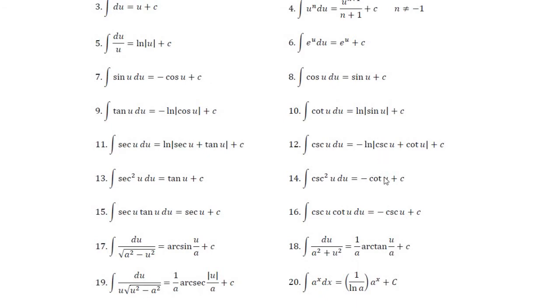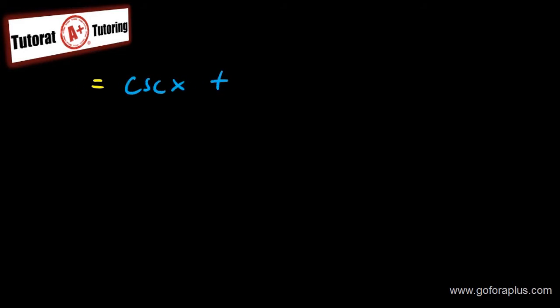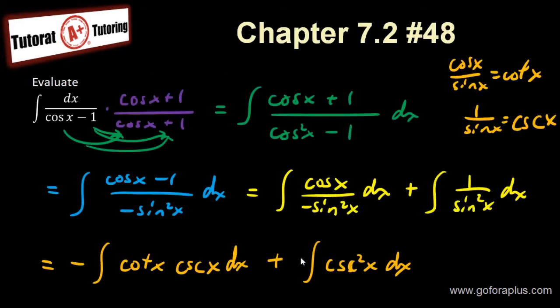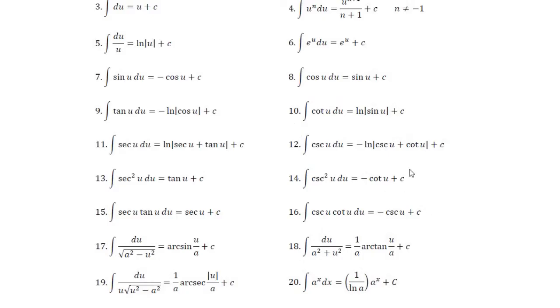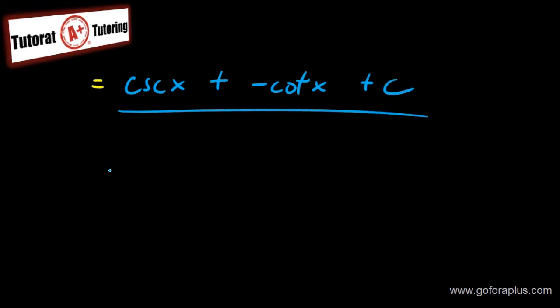This equals minus cosecant. But I have an extra minus sign in the front, so it will be just cosecant x. And then the second term — the integral of cosecant squared — gives me minus cotangent. So I have cosecant x minus cotangent x plus C. And this is my final answer for this question.